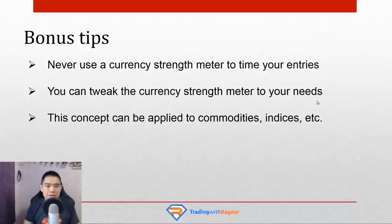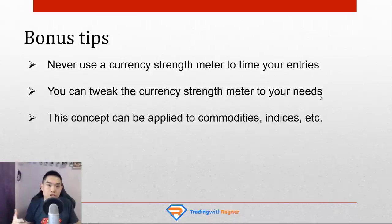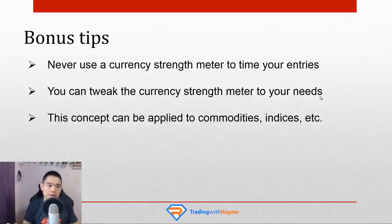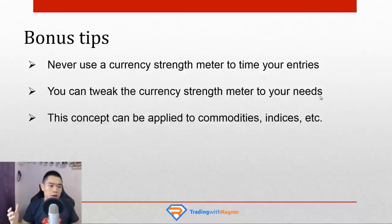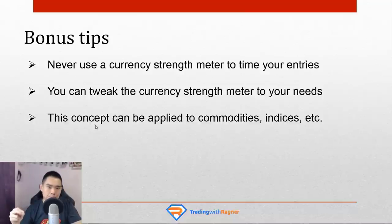Number two: you can tweak the currency strength meter to your needs. I use the 15-week ROC, which considers the last three months of price change. If you're a shorter-term trader, you can use a 5-week ROC; if you're a longer-term trader, you can go up to a 30-week ROC. There is no such thing as the best lookback period or the best settings — it doesn't exist. You have to know your trading style — long-term, medium-term, or short-term — and tweak your currency strength meter accordingly. Since I trade the 4-hour to daily time frame, the 15-week ROC suits me well.